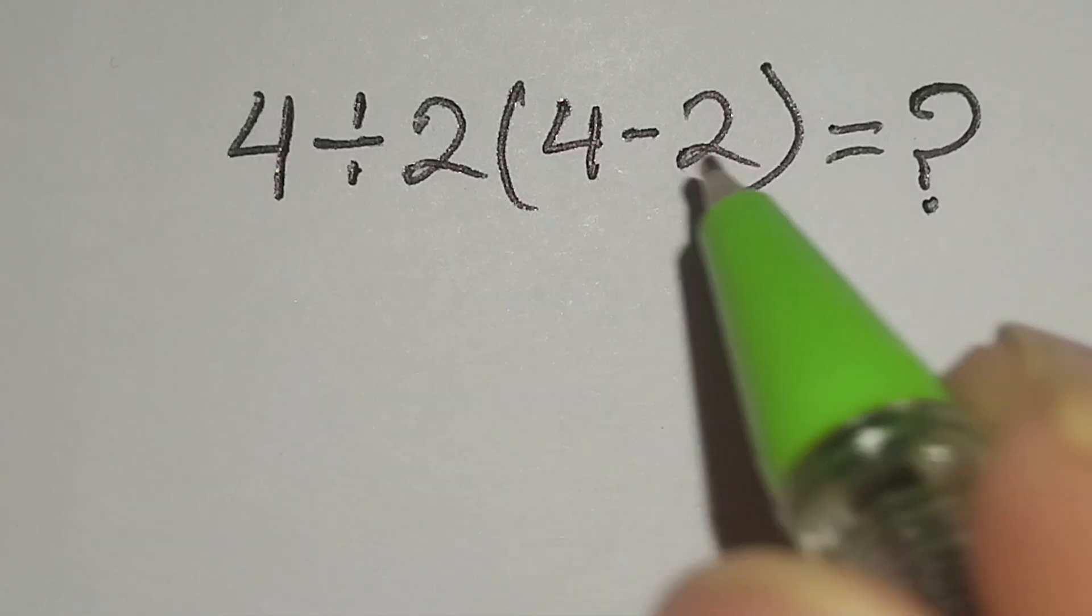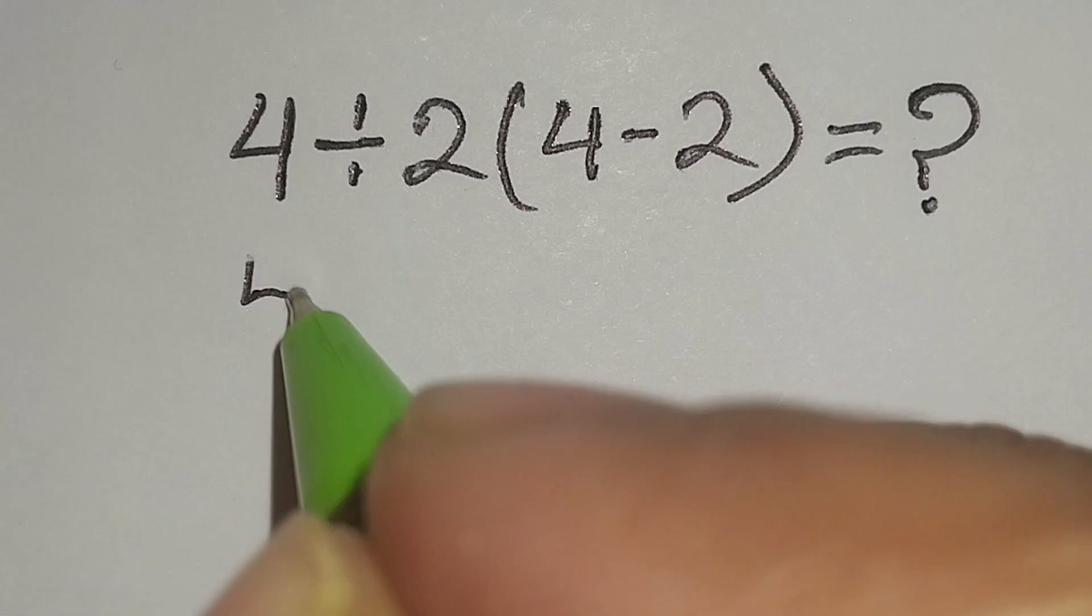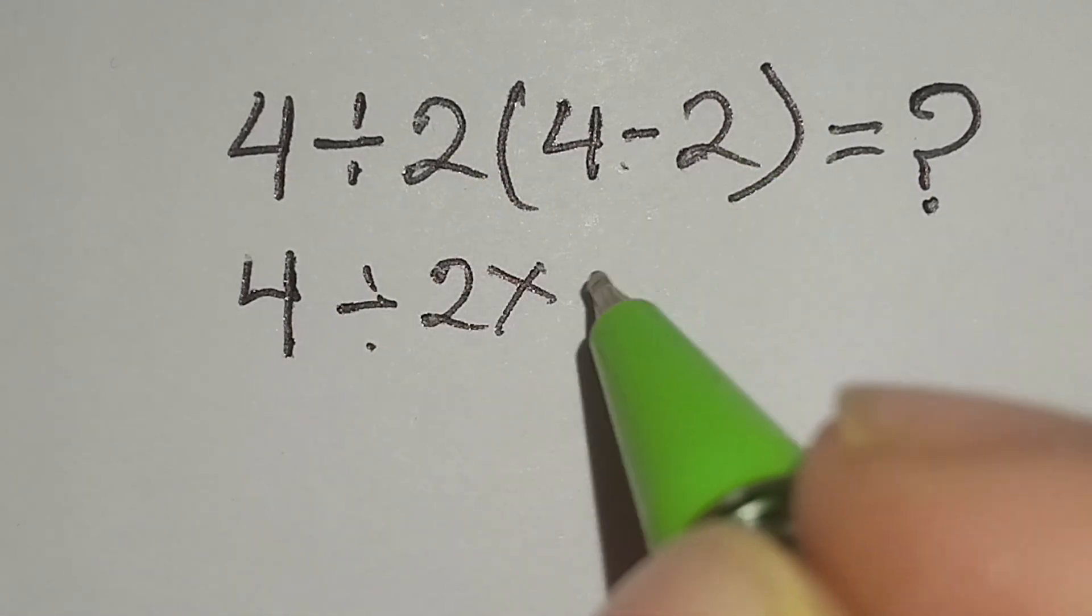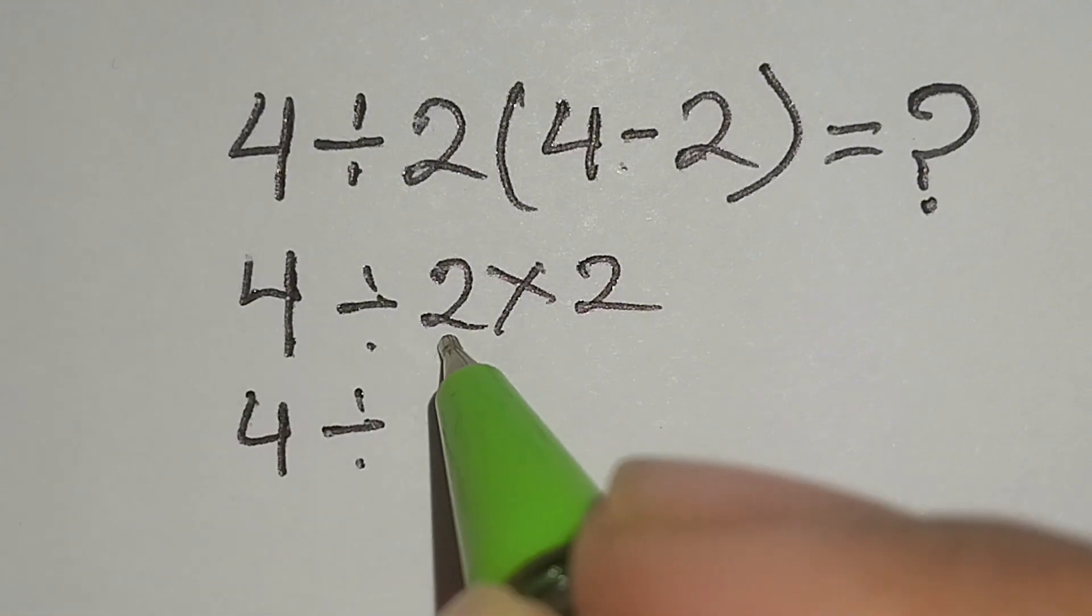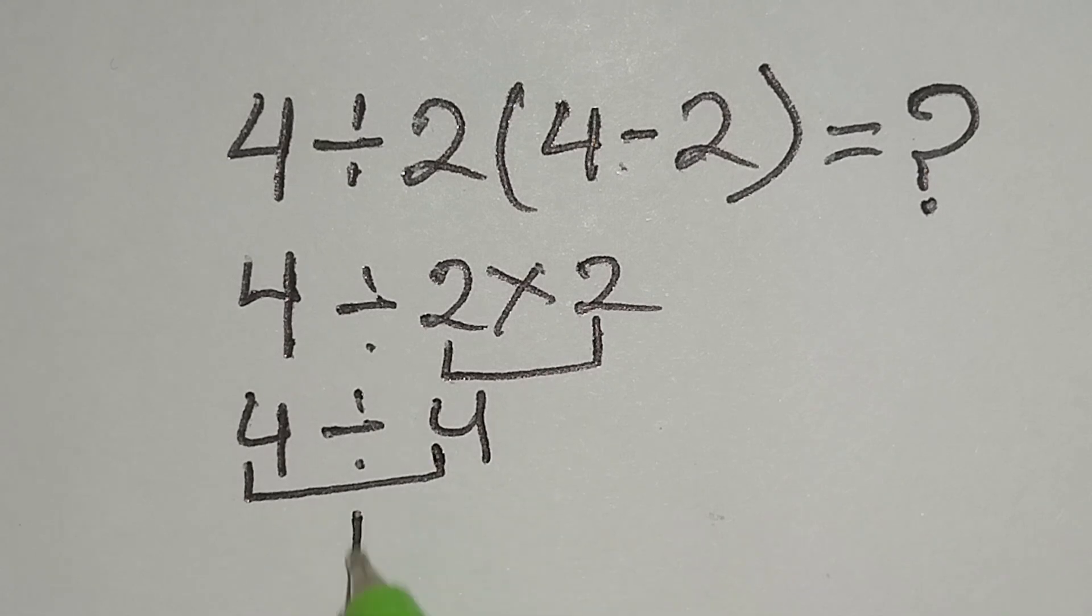4 divided by 2 bracket 4 minus 2 equals what? Here, 4 divided by 2 times 4 minus 2 gives us 2. Then 4 divided by 2 times 2 gives us 4. Finally, 4 divided by 4 gives us 1. But this answer is not correct.